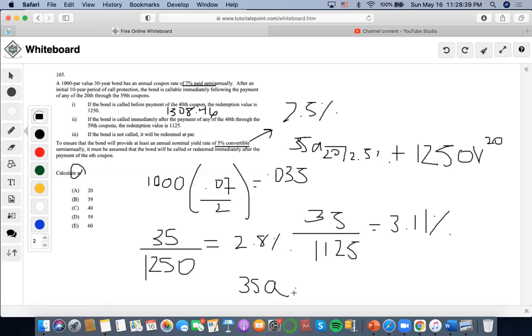We're going to do 35 and call it at the earliest date. 40 is the earliest date within that interval. We're going to do 35A angle 40 at 2.5 plus the redemption value 1125 to the V40. Let's use my calculator: 35 as payment, 40 as the number of years, 2.5 as the interest rate, 1125 as the future value, and I'm getting 1,297.58.